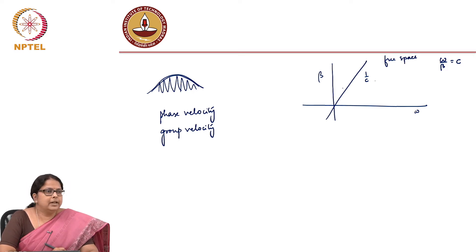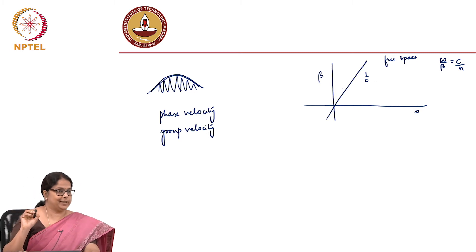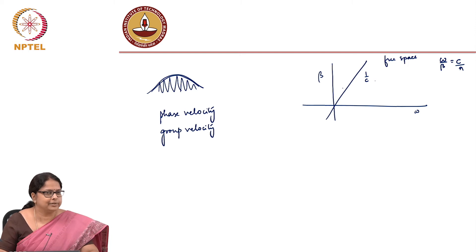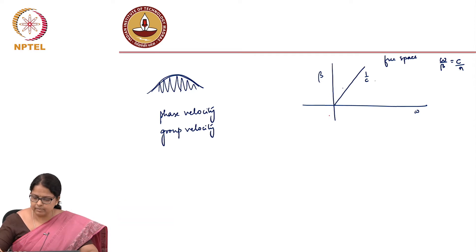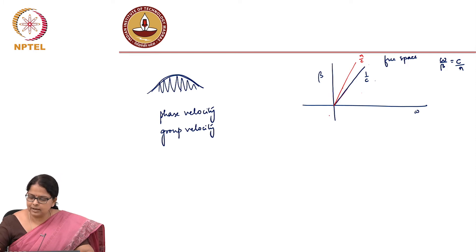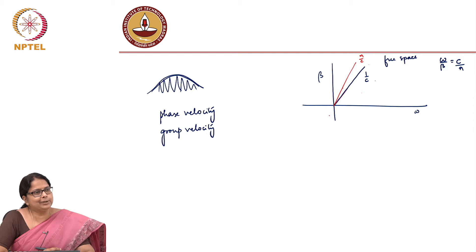Now in a medium, if you plot the same curve, C becomes C divided by n. If n is not a function of frequency, the line remains straight but with a steeper slope — it is n over C since n is greater than 1. This is called the light line, and any medium will have its beta versus omega plot inside the light line.